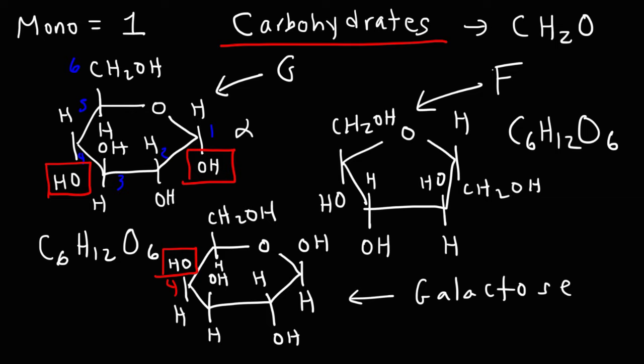Glucose and galactose are known as stereoisomers. They have the same chemical formula. Their atoms are connected the same way. They have the same functional groups, but the only difference is the way their hydroxyl groups are oriented in space. Stereoisomers have the same connectivity but different spatial arrangements.